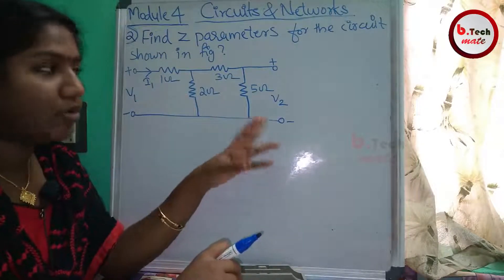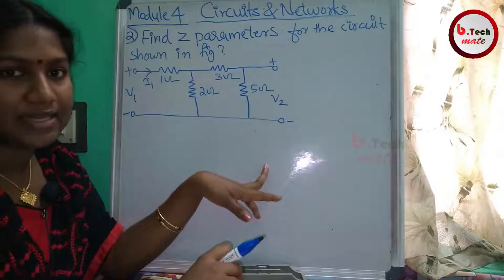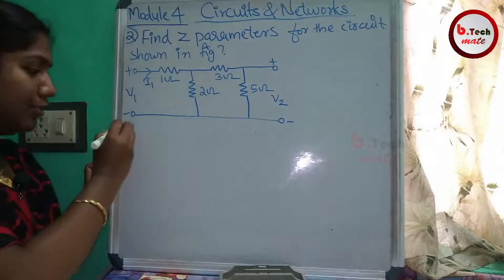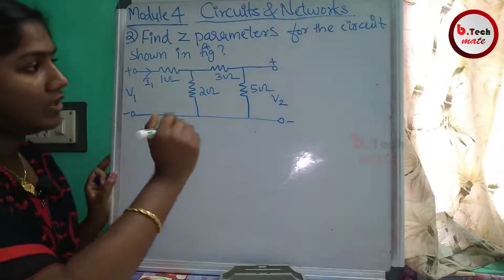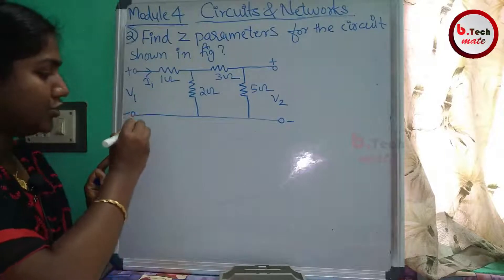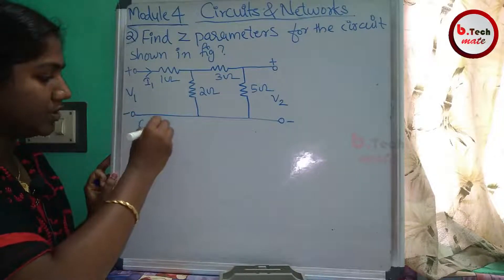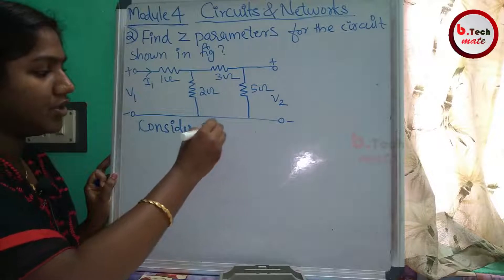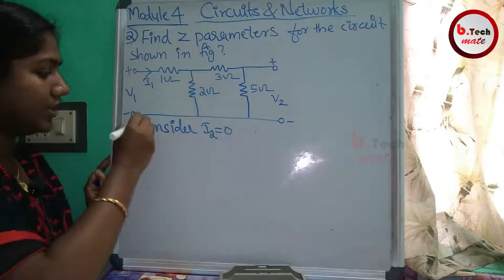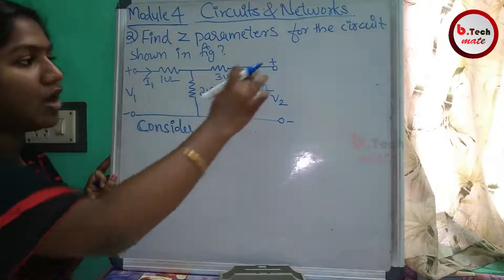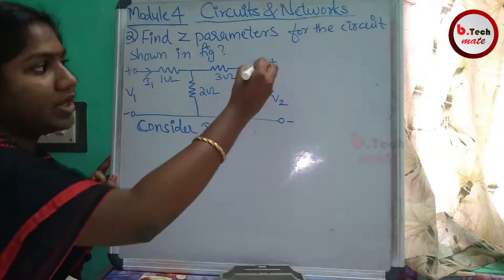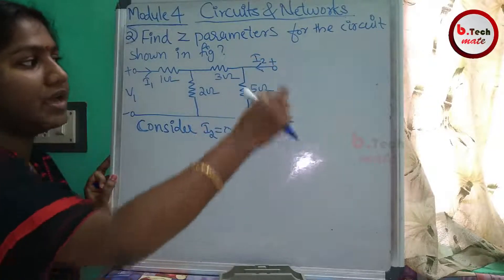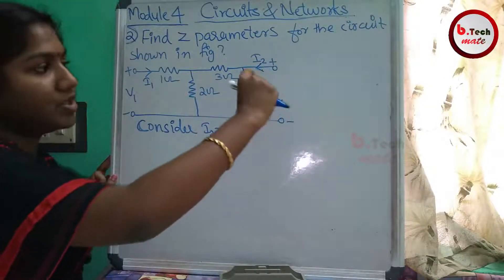We will start with the output side. We open the output port by setting I2 equal to zero. That is how we open the output port — I2 is zero, output current is zero.